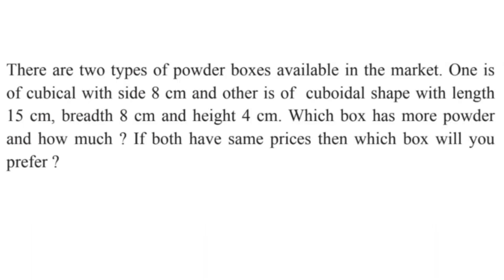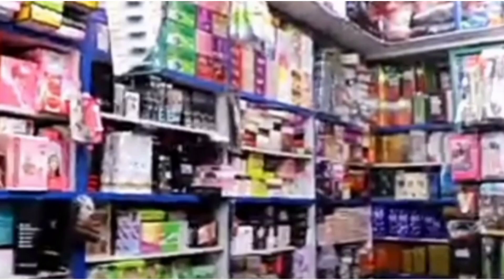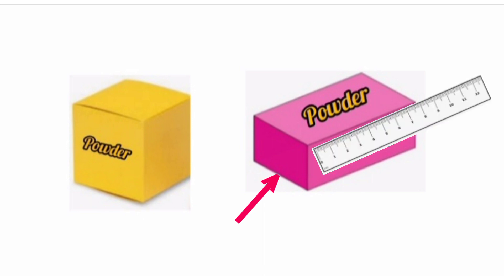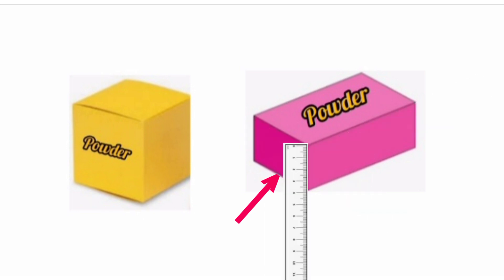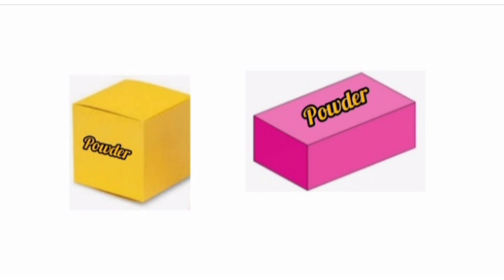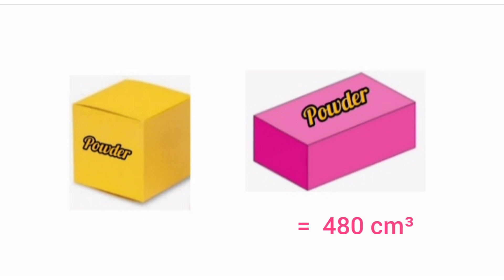Our next question: there are two types of powder boxes available in the market. One is a cube with side 8 cm, and the other is a cuboid with length 15 cm, breadth 8 cm, and height 4 cm. Which box has more powder and how much? If both boxes have the same price, which would you prefer? Volume of the cubic box is side into side into side, which equals 512 cm³. Volume of the cuboid is length into breadth into height, which equals 480 cm³. So the cubic box is greater.